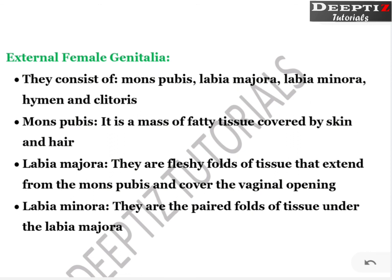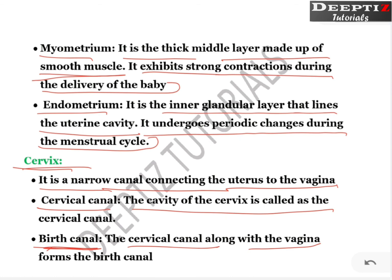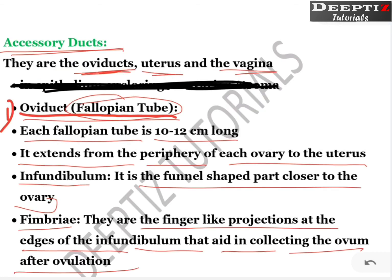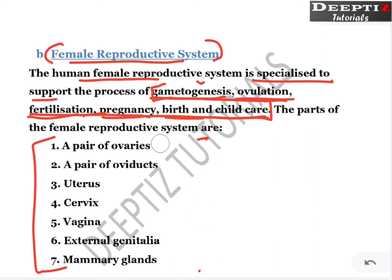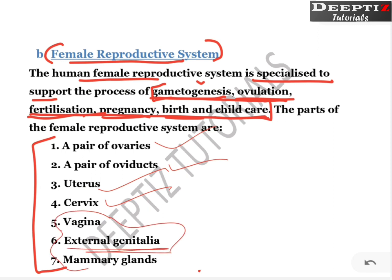In the next video lesson we will study the external female genitalia and mammary glands. So far we have covered ovaries, oviduct, uterus, cervix, and vagina partially. Along with external genitalia we will study all these parts in more detail. Thank you for watching — we will complete this topic in the next lesson.